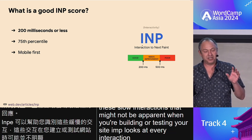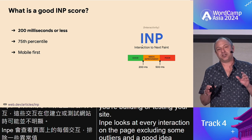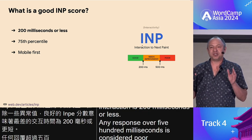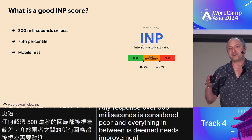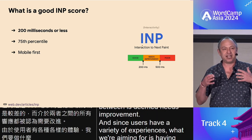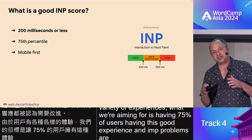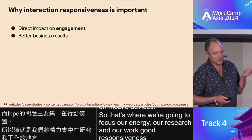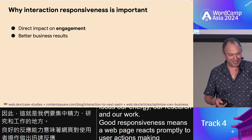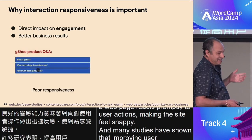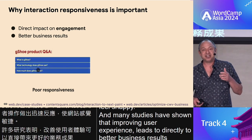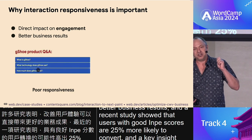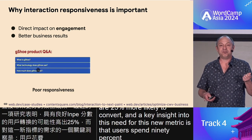INP looks at every interaction on the page, excluding some outliers. A good INP score means that your worst interaction is 200 milliseconds or less. Any response over 500 milliseconds is considered poor, and everything in between is deemed needs improvement. Since users have a variety of experiences, what we're aiming for is having 75% of users having this good experience. INP problems are mainly on mobile devices, so that's where we're going to focus our energy. Many studies have shown that improving user experience leads directly to better business results, and a recent study showed that users with good INP scores are 25% more likely to convert. A key insight is that users spend 90% of their time on web pages after they load.